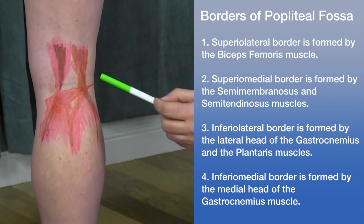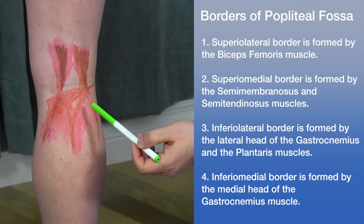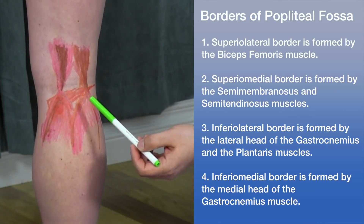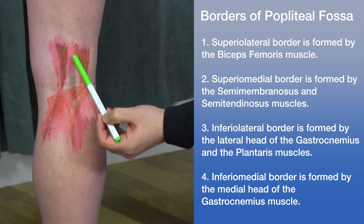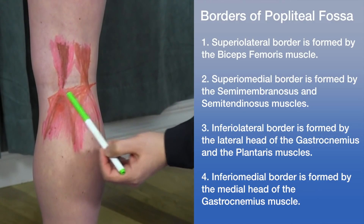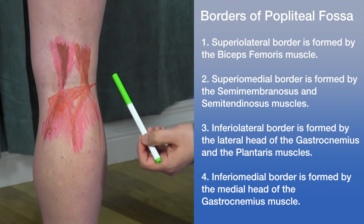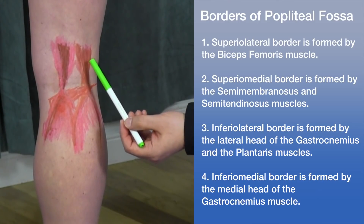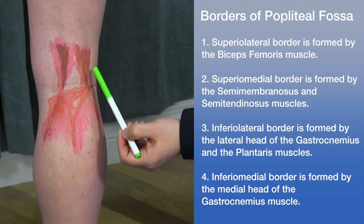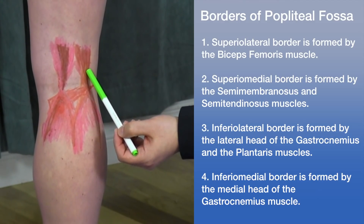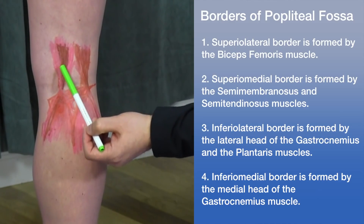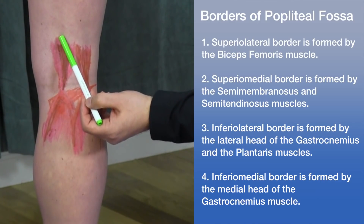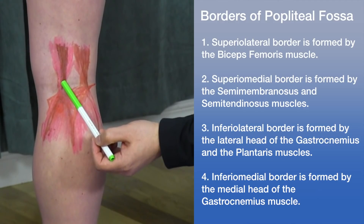Now let's look at the borders of the popliteal fossa. The fossa itself is almost like a diamond shape. Looking at the superior borders: superior laterally we have the biceps femoris, while superior medially we have the semimembranosus, with the semitendinosus on top of that.